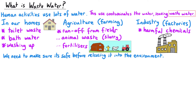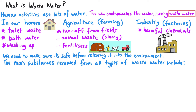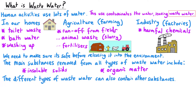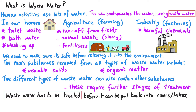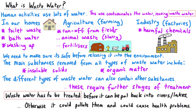We need to make sure that this wastewater is safe before we release it into the environment, otherwise it might cause harm. The main substances removed from all types of wastewater include insoluble solids and organic matter. Different types of wastewater can also contain other substances, requiring further stages of treatment. Wastewater has to be treated before it can be put back into rivers, lakes, or the sea, because otherwise it could pollute them and cause health problems.